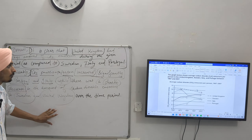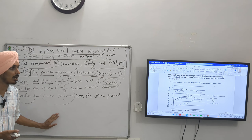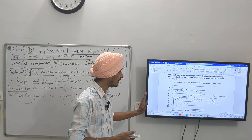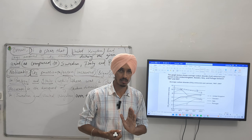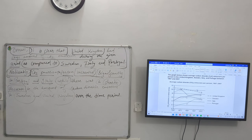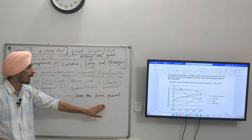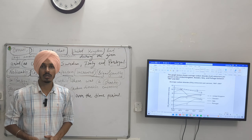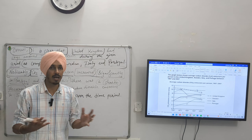This is our complete overview of two sentences. I have discussed everything — the maximum value, I have compared the countries, and I have discussed the change that came over the years. Overall, it is clear that United Kingdom had a large amount of CO2 emission during the given period as compared to Sweden, Italy and Portugal. Noticeably, CO2 emission per person increased significantly in Portugal and Italy while there was a drastic decrease in the amount of CO2 emission in Sweden and United Kingdom over the time period.